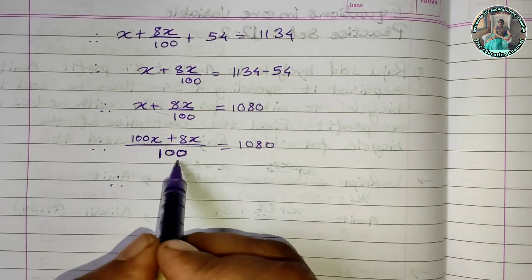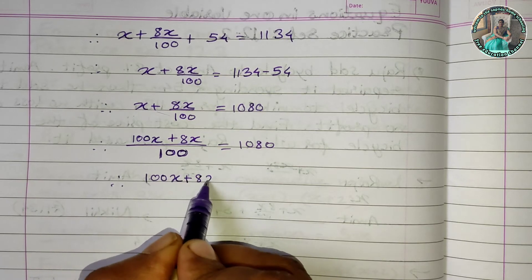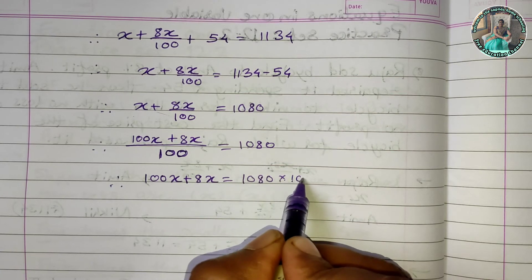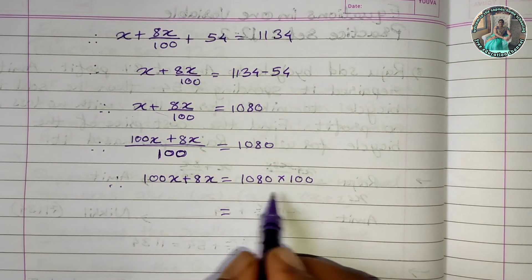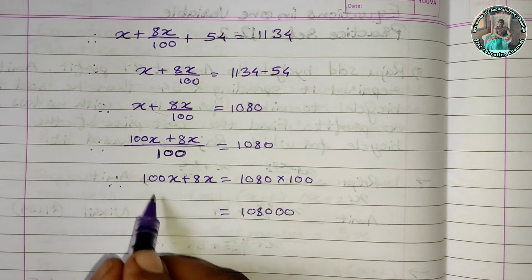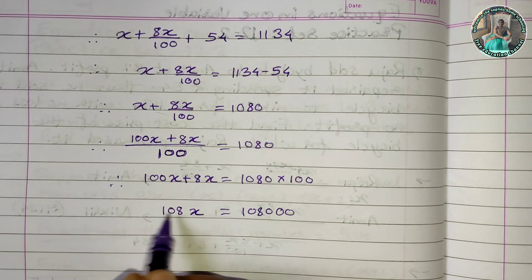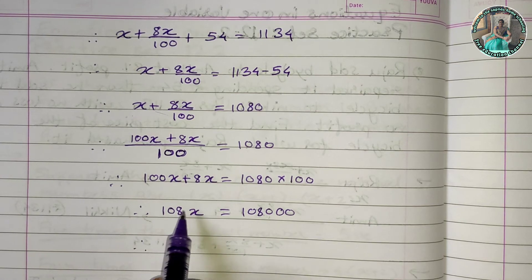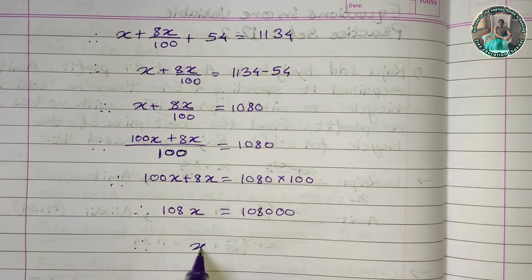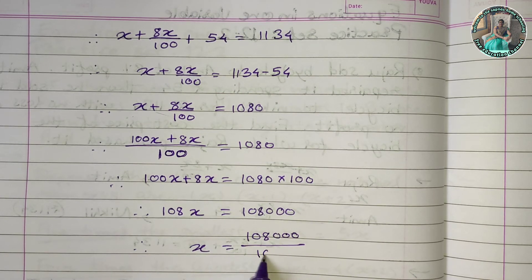Multiplying both sides by 100, we get 100x plus 8x equals 108000. This gives us 108x equals 108000.